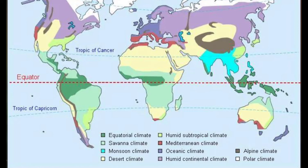The major natural regions of the world are: equatorial region, monsoon region, tropical grassland region, tropical hot desert region, Mediterranean region, mid-latitude desert region, mid-latitude temperate region, mid-latitude grassland region, cold coniferous forest region, cold polar region, and high mountain region.